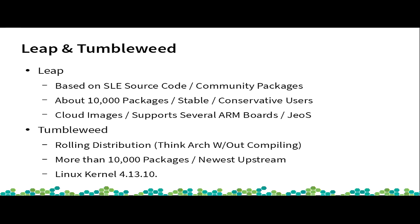Leap is the traditional distribution that you might be aware of. It's based on SUSE Linux Enterprise source code, but community packages are built on top of that. And Tumbleweed is the rolling distribution. This past week we've had seven snapshots of brand new software — we have the latest kernels, 4.13.10, and the next stable one is .11, so we should have another snapshot this week bringing that kernel in. Basically, if you want to stay close to upstream, Tumbleweed is a good distribution for that.